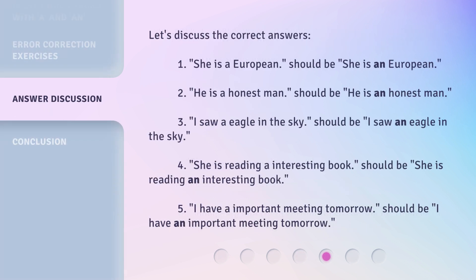Let's discuss the correct answers. 1. 'She is a European' should be 'She is a European.' 2. 'He is a honest man' should be 'He is an honest man.' 3. 'I saw eagle in the sky' should be 'I saw an eagle in the sky.' 4. 'She is reading an interesting book' — that is already correct. 5. 'I have an important meeting tomorrow' — that is also already correct.